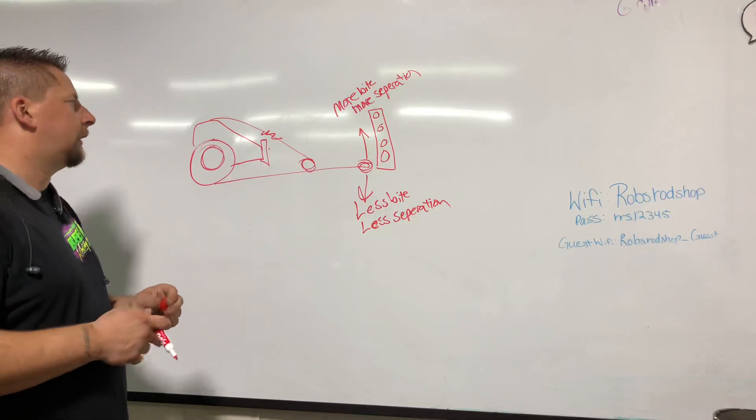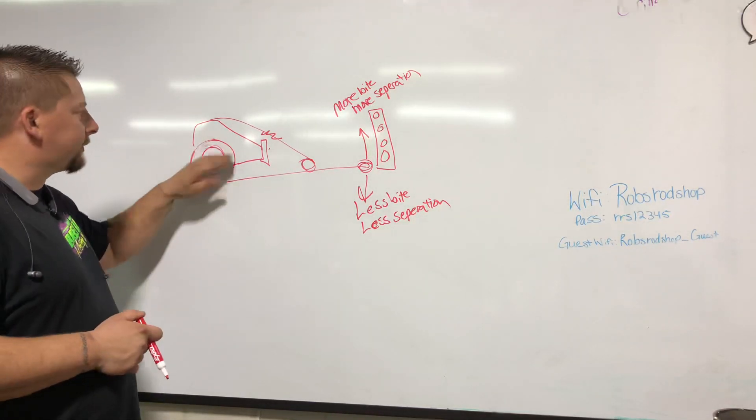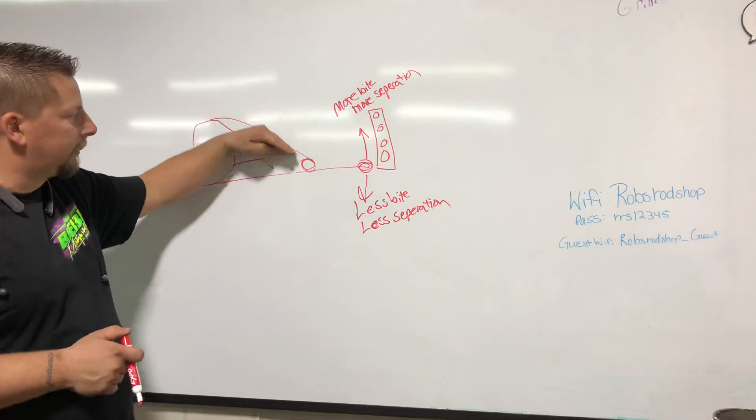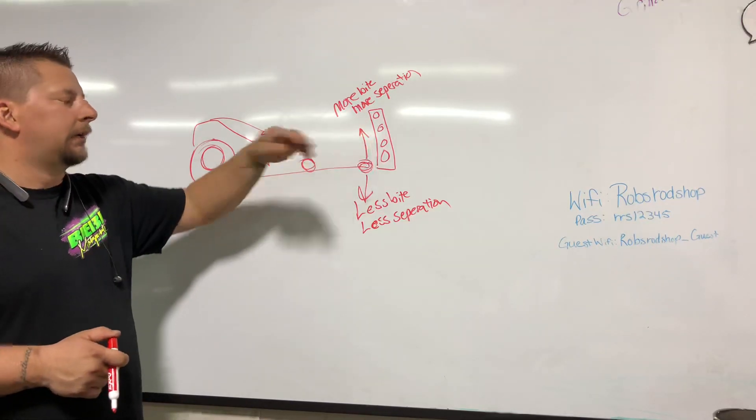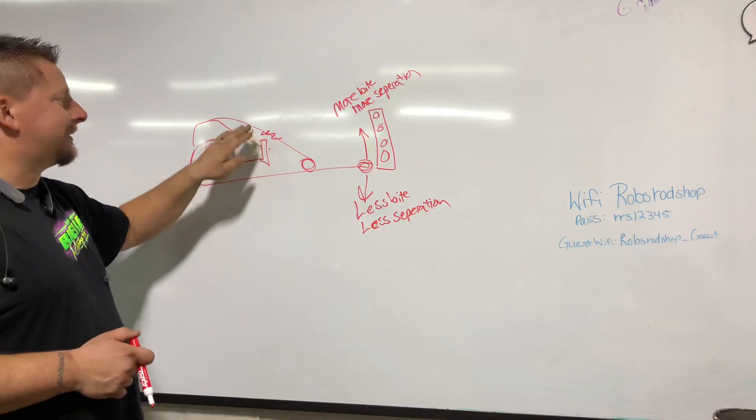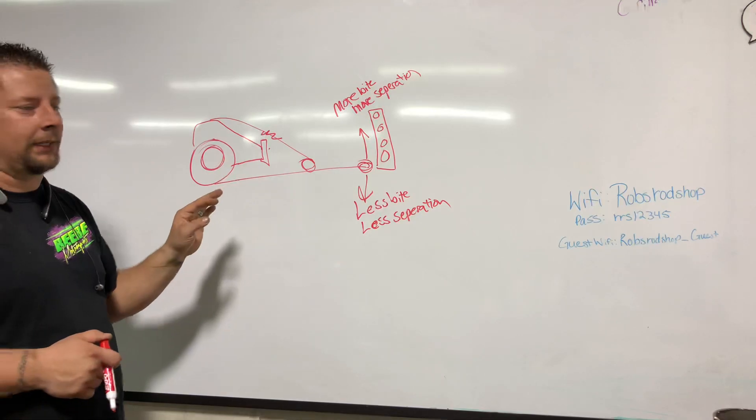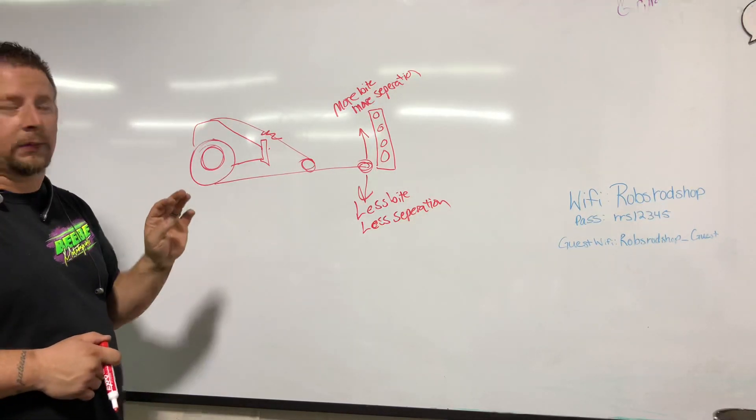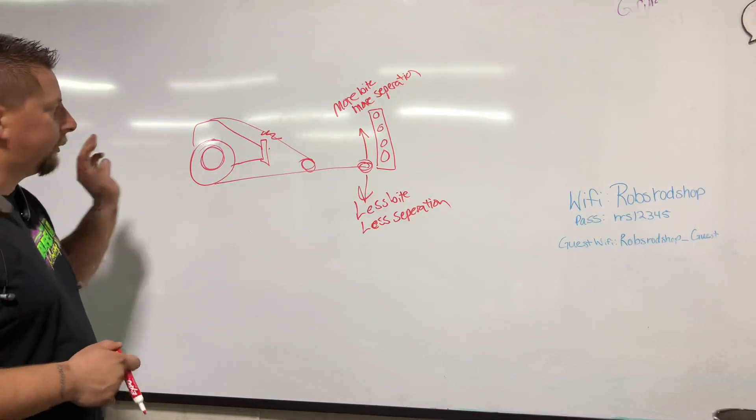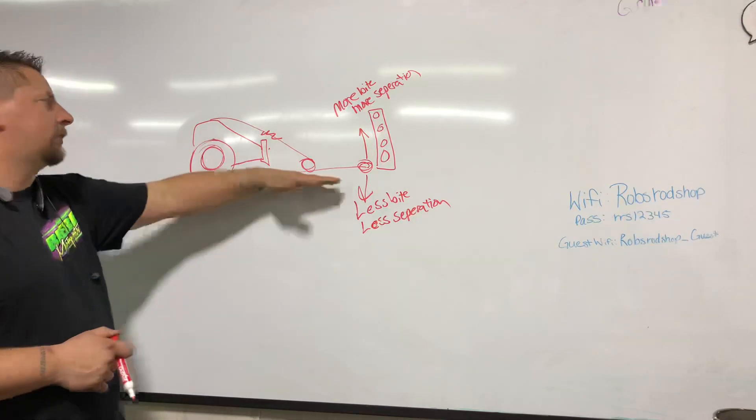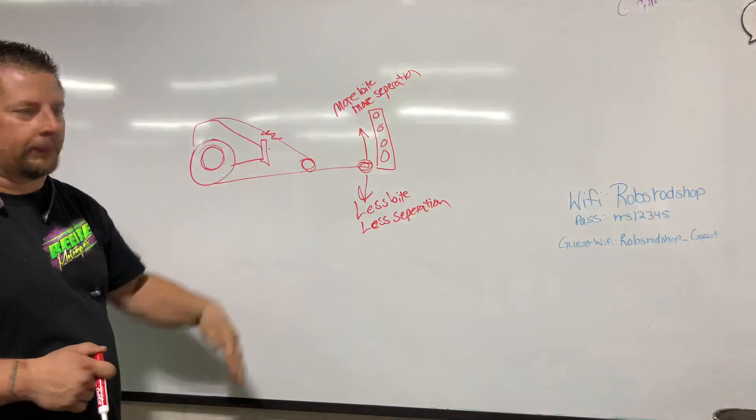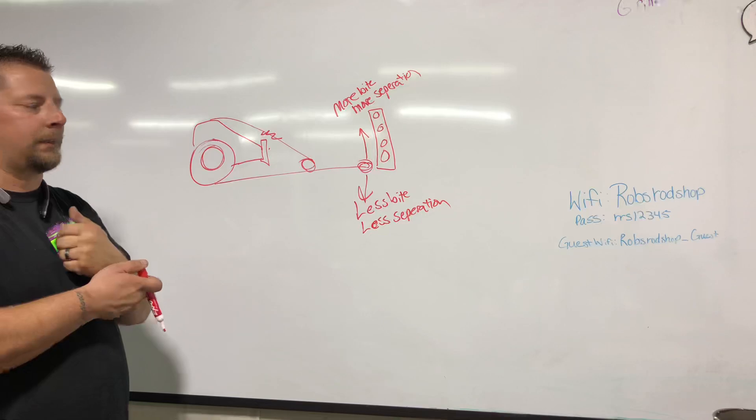This would be the housing and center section. Upper bar ties into the lower bar, ladder bar ties into the car. This upper bar adjustment does nothing but pinion angle. Pinion angle does nothing but keep the u-joints in the right spot, so don't go changing a bunch of that crap. If you change this bar angle, just remember you'll have to bring your pinion angle back down to match to make the u-joint correct.